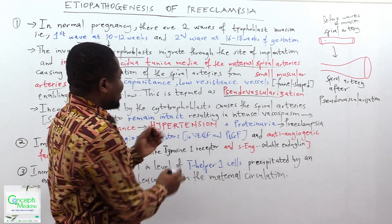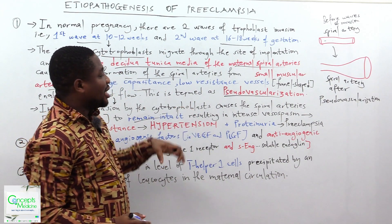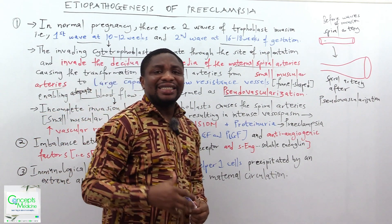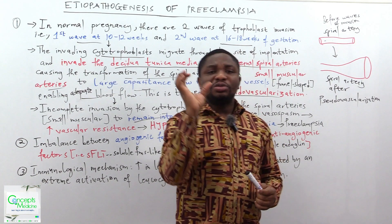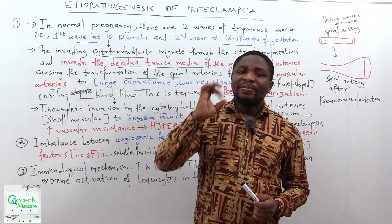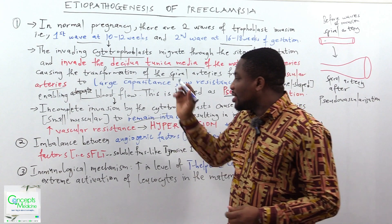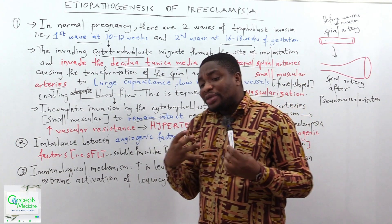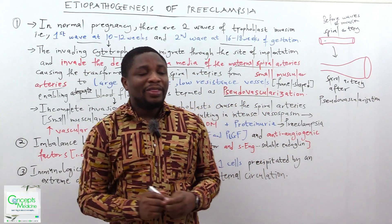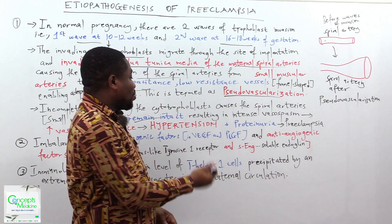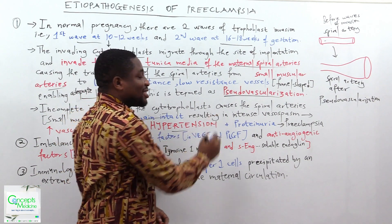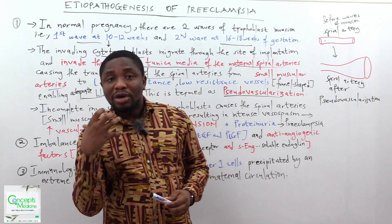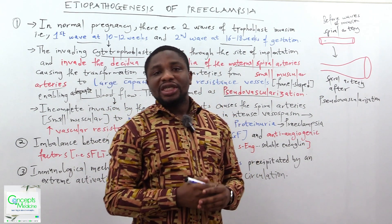When the spiral arteries remain intact, it causes intense vasospasm. The blood vessels become narrow and constricted, causing vascular resistance to increase. When vascular resistance is increased, blood pressure increases, giving us hypertension. With time, the hypoxic injury to the glomerular filtration barrier gives rise to proteinuria.